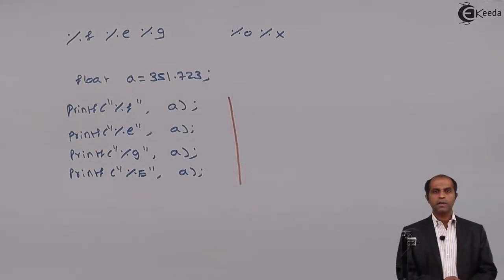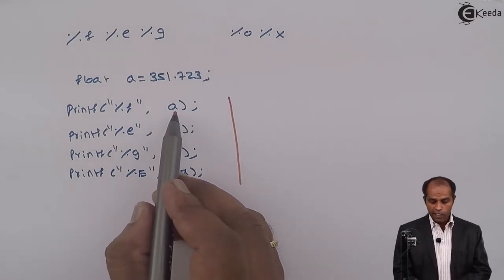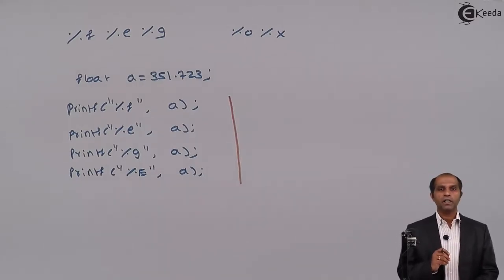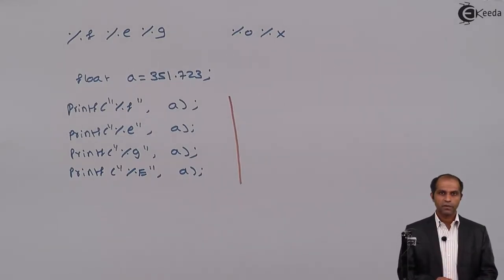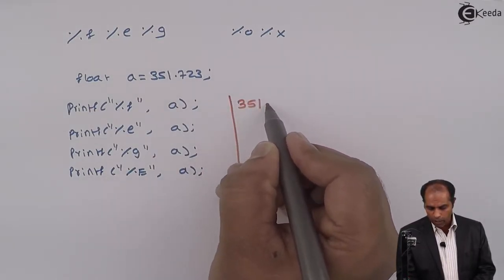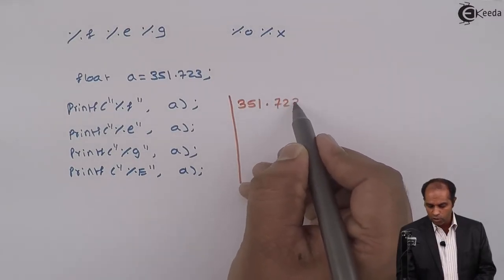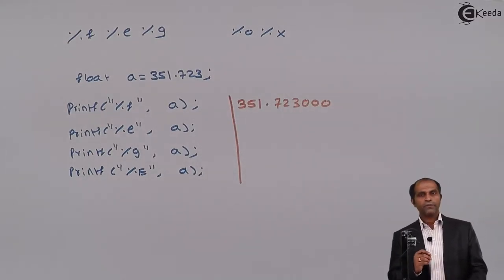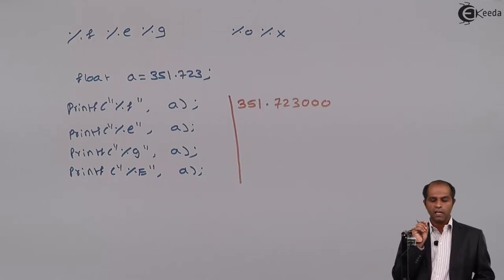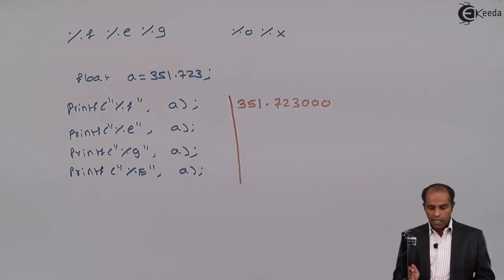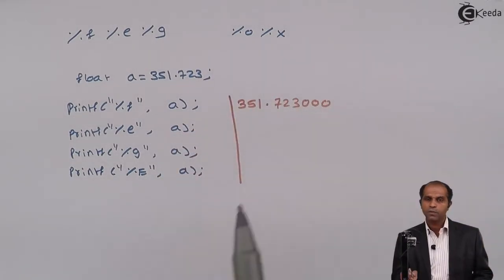The first statement says that the value of a needs to be displayed with the %f specifier. We have discussed that %f will always display a fractional number with six fractional digits. So the value of a is displayed as 351.723 followed by three additional zeros.